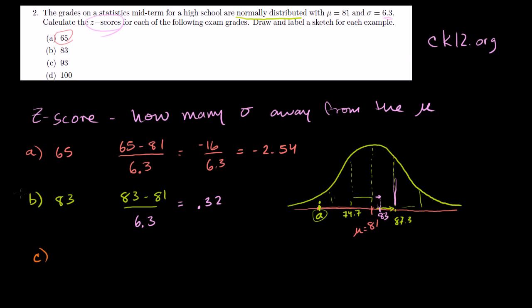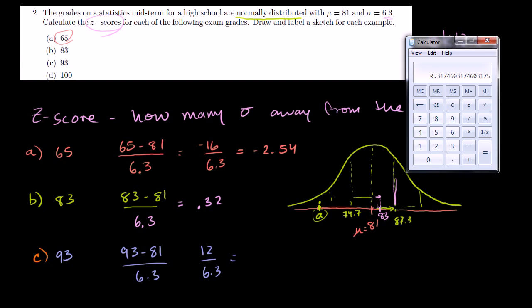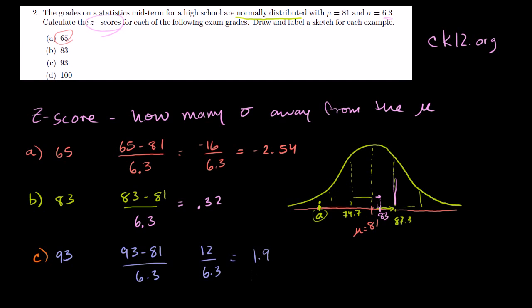Part C, 93. We do the same exercise. 93 is how much above the mean? Well, 93 minus 81 is 12. But we want it in terms of standard deviation. So 12 is how many standard deviations above the mean? Well, it's going to be almost 2. Let's take the calculator out. So 12 divided by 6.3 is 1.9 standard deviations. Its z-score is 1.9, which means it's 1.9 standard deviations above the mean. So the mean's 81. We go one whole standard deviation, and then 0.9 standard deviations. And that's where a score of 93 would lie right there. Its z-score is 1.9.